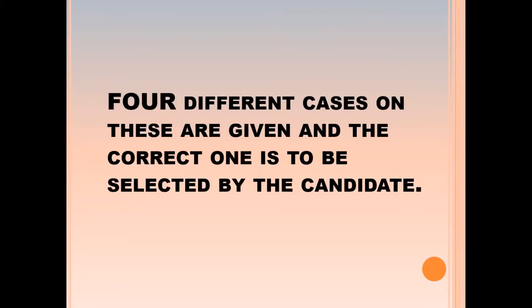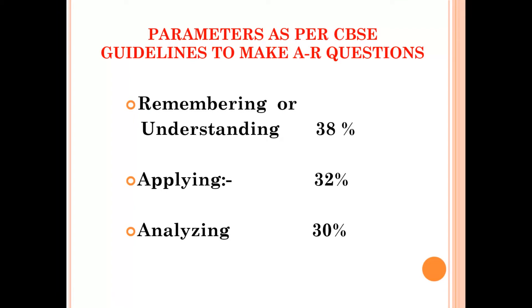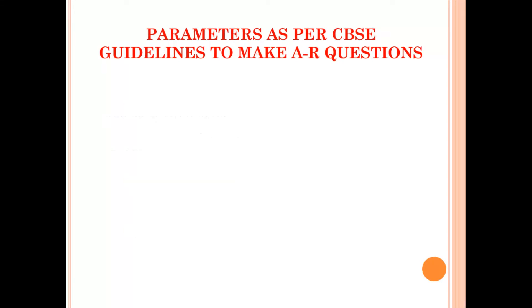In this way we can make four types. Four different cases are given and the correct one is to be selected by the candidate. The CBSE guidelines for making assertion reason questions: remembering and understanding 38%, applying 32%, analyzing 30%.